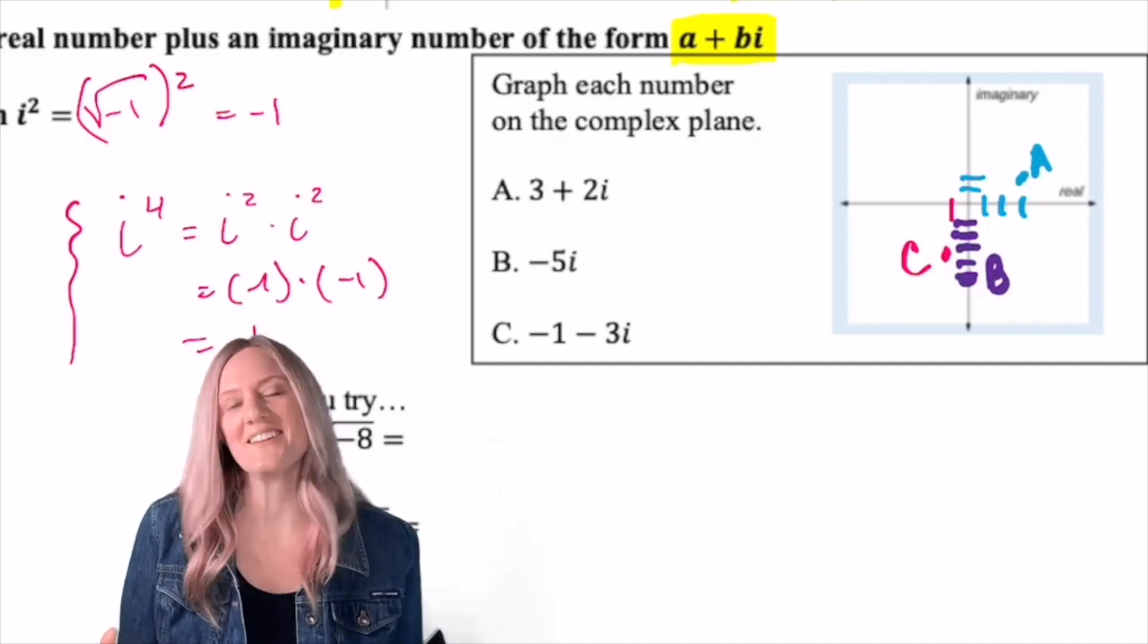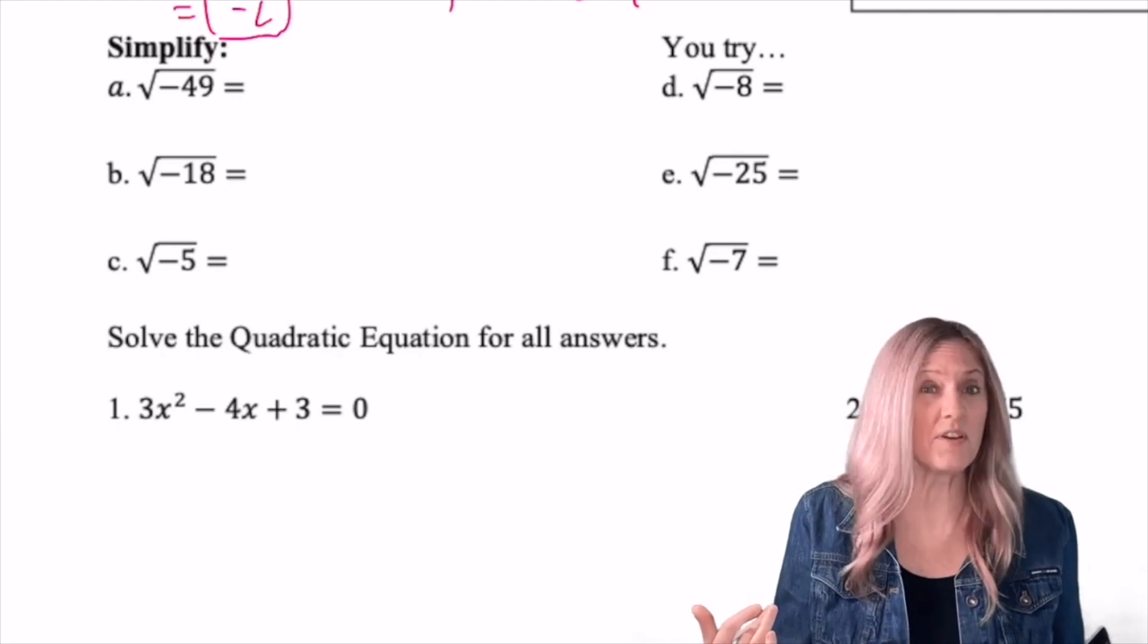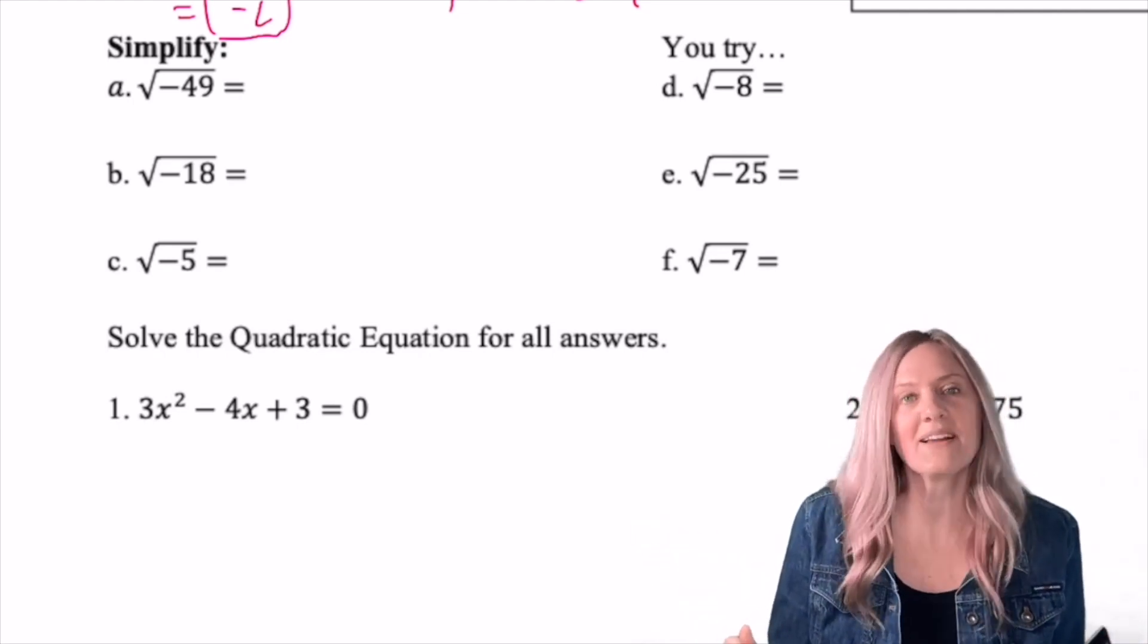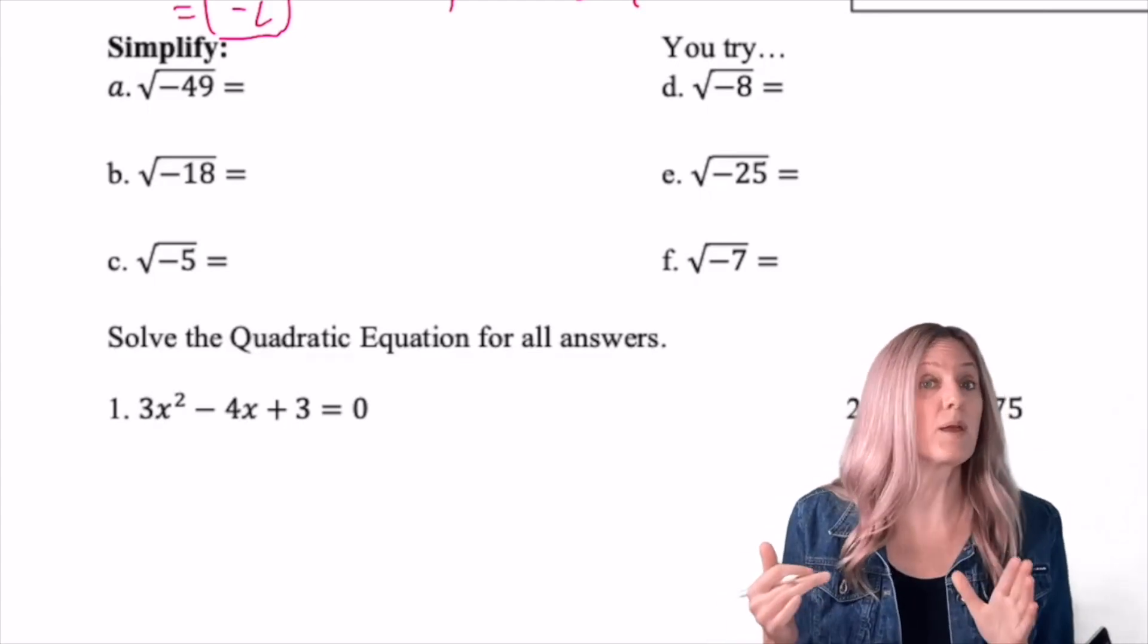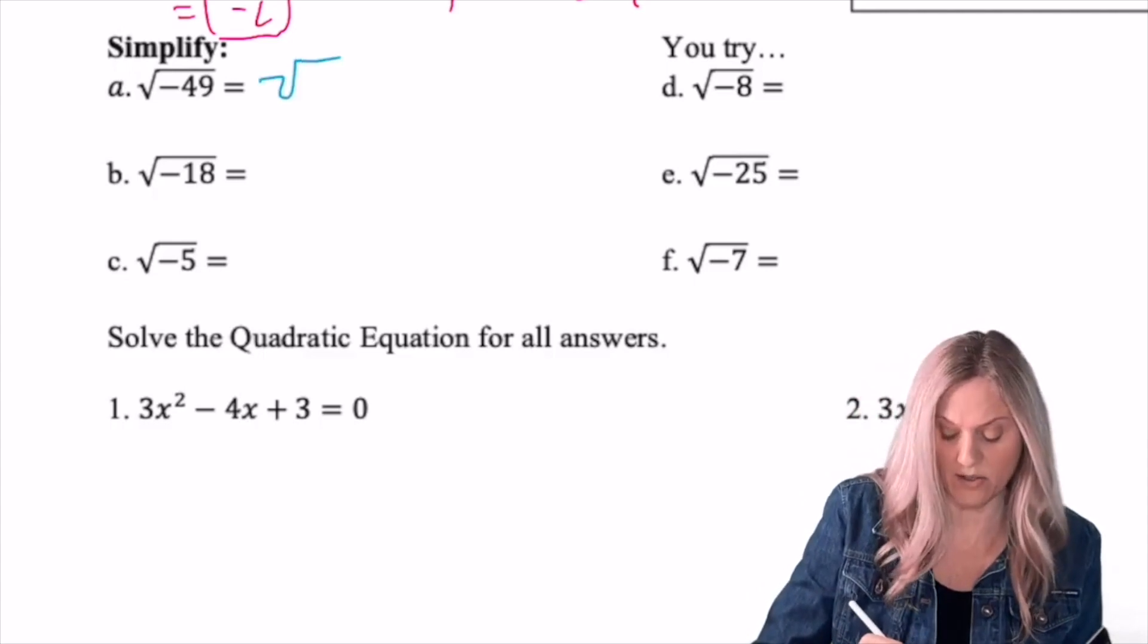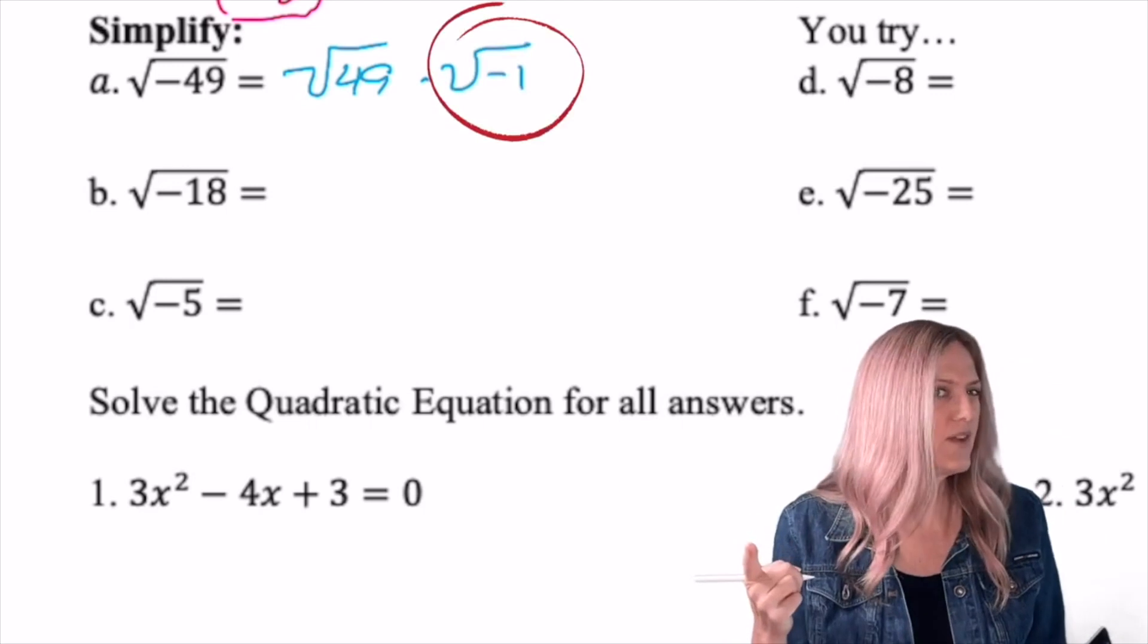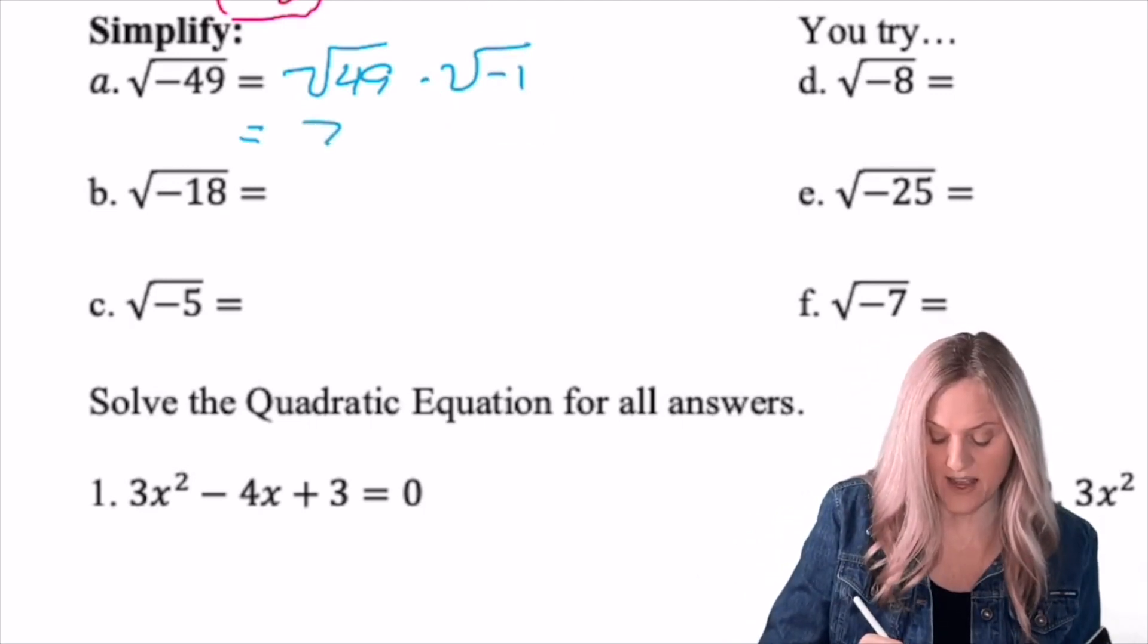Let's go ahead and simplify some of our square roots. Square root of negative 49. Previously, we'd just say not possible. But now with complex numbers, we can simplify this. So think of factors that we can break it down into. Square root of 49 is all good. But then it's times square root of negative one. And square root of negative one is i. So my answer would simply be 7i.